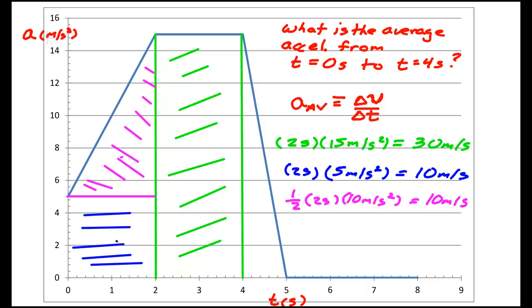And for this triangle here, it goes from 5 to 15. So this height is 15 minus 5, that's 10. And this base is 2, so I have 1 half, 2 seconds, times 10 meters per second squared, which gives me another 10 meters per second. So putting all this together, delta v is 10, 20, plus 30 more is 50 meters per second. So the average acceleration is 50 meters per second divided by a total of 4 seconds, which is 12.5 meters per second squared. So that's the answer for calculating the average.